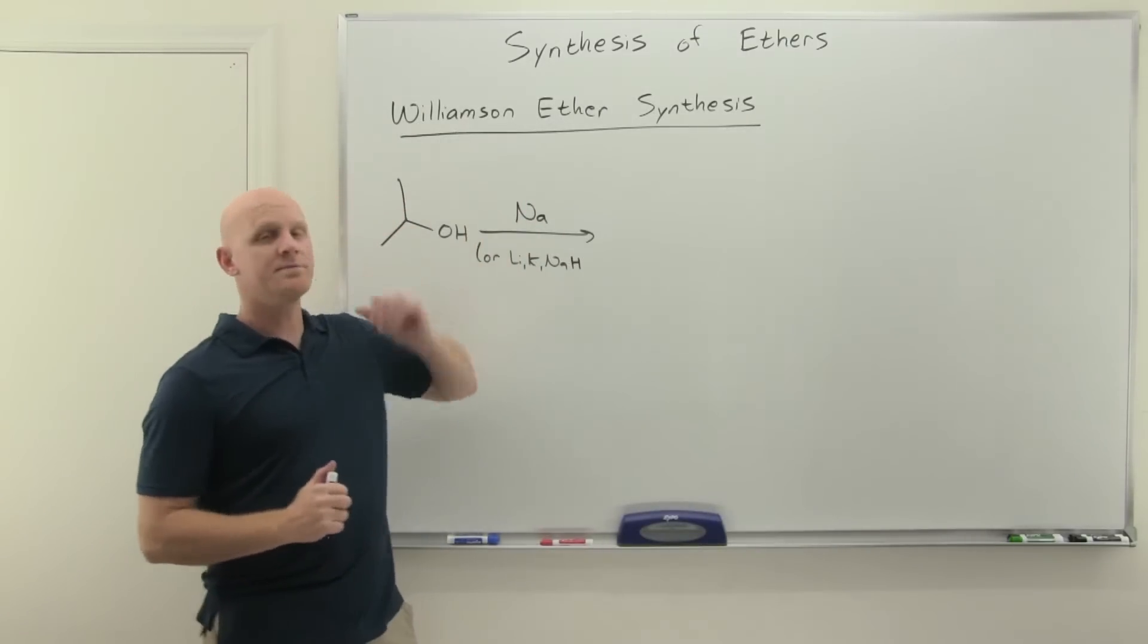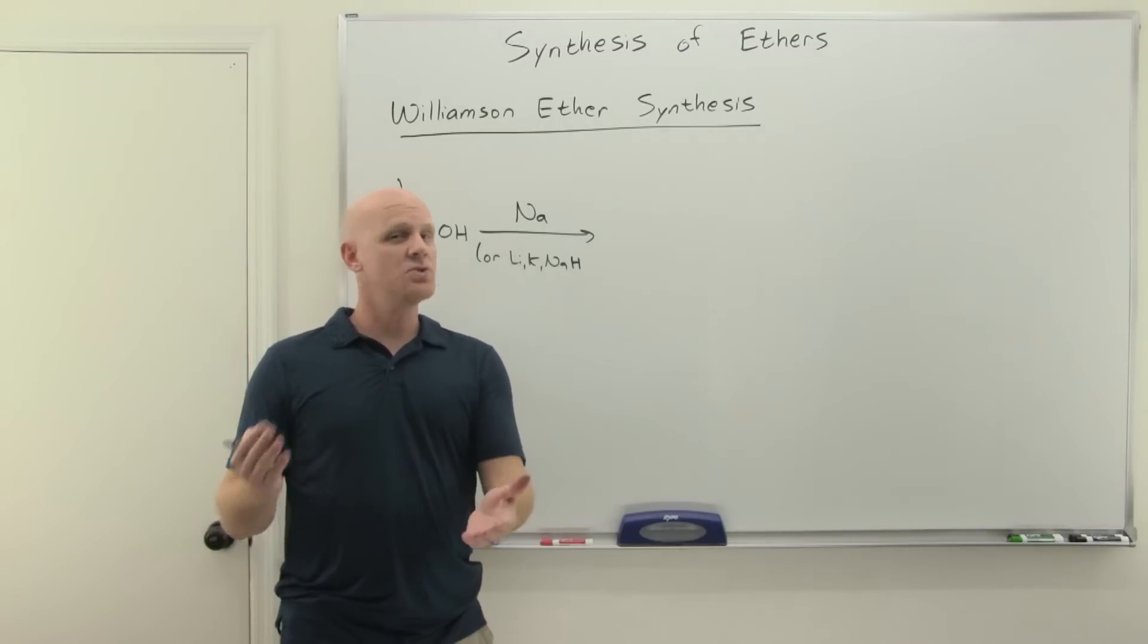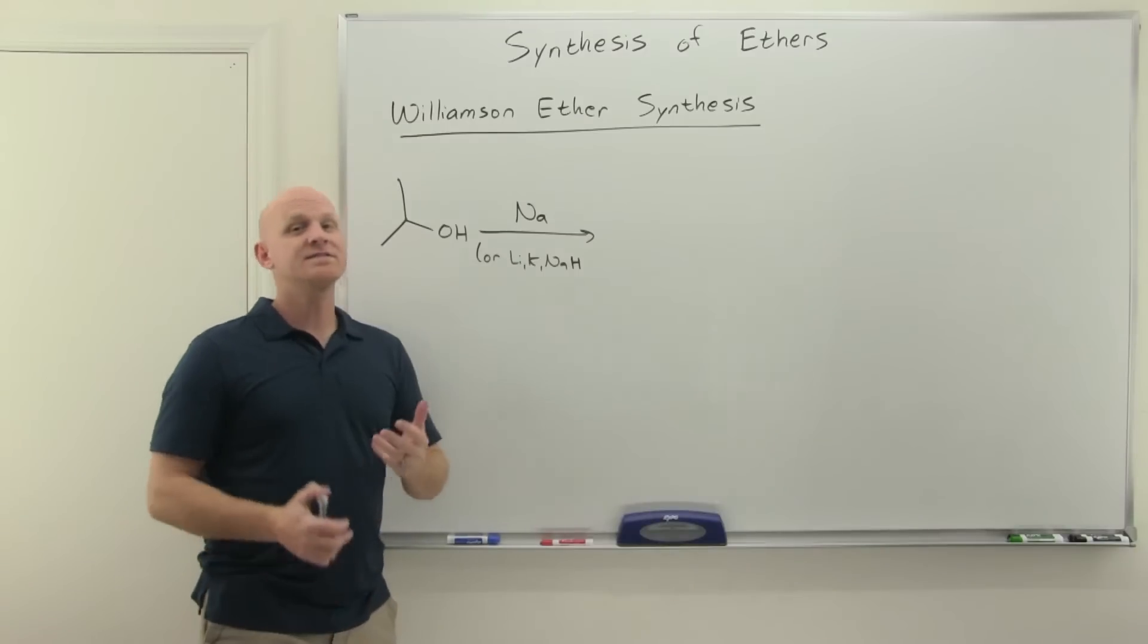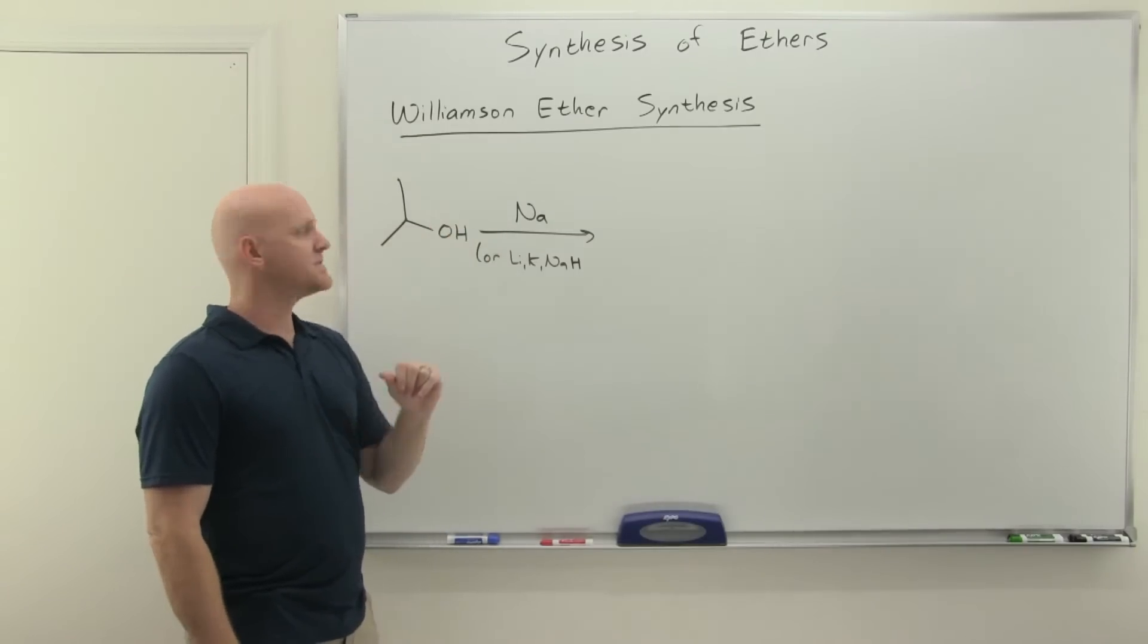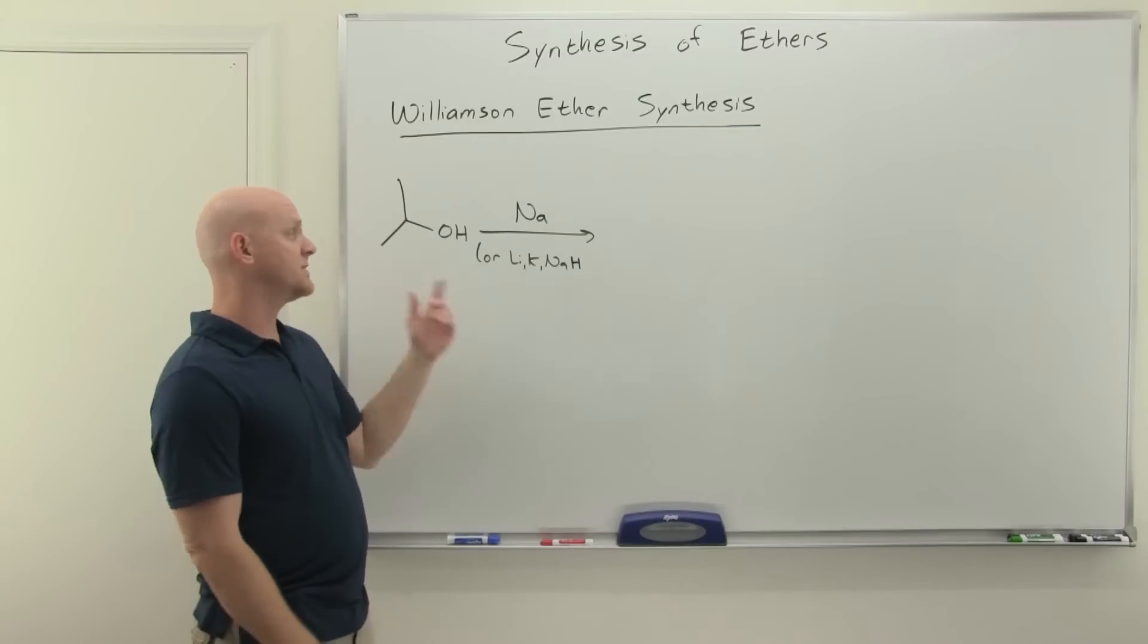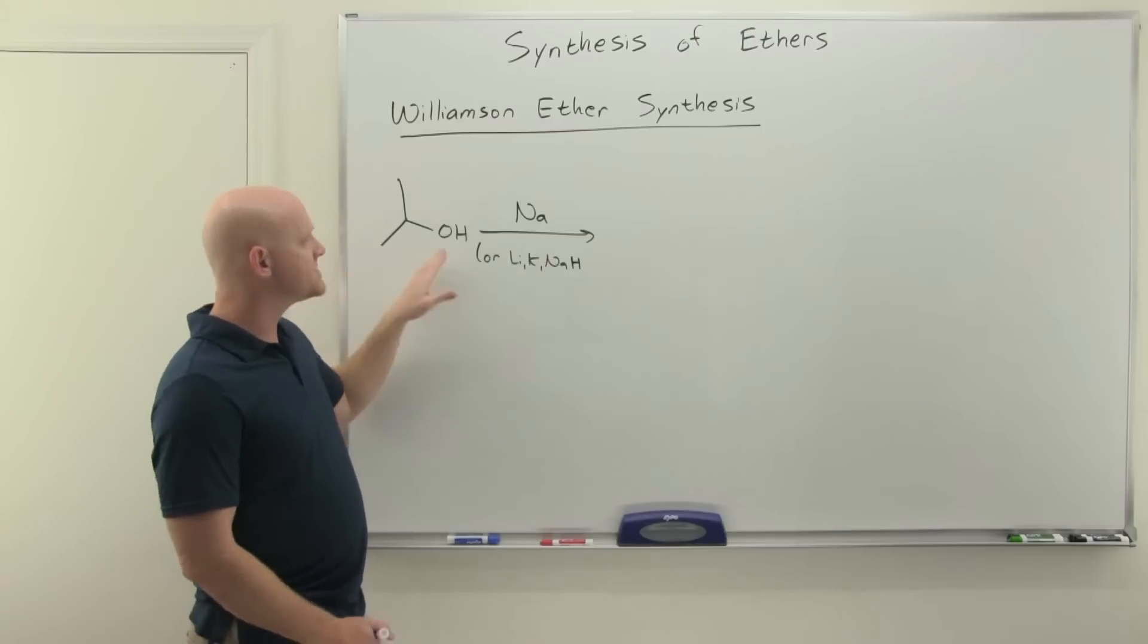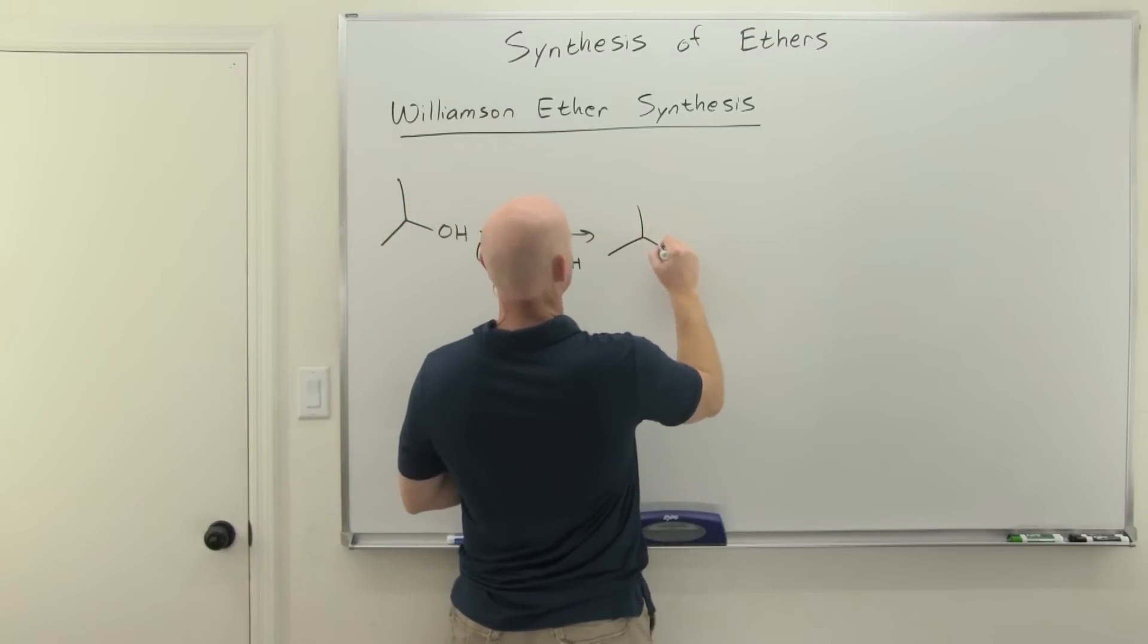Alright, so now we'll take a look at what's called the Williamson Ether Synthesis, and truth is, this is just a way to use an SN2 reaction to make an ether. It typically starts with an alcohol, and you're going to deprotonate that alcohol, and the most common reagent used is sodium. We went through these back in the alcohol chapter, but technically you could use lithium or potassium, or even sodium hydride as well, all of which are going to deprotonate your alcohol, leading hydrogen gas to bubble out of your solution.